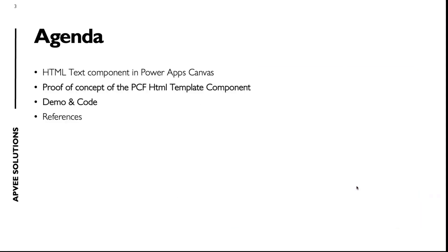The agenda for today is just an introduction to the default HTML text component in PowerApps Canvas. Then I want to show you a proof of concept of a component built on the PowerApps component framework to create a better version of this default HTML text component. I'll show you some demos and the code, and then at the end, just one slide with some references.